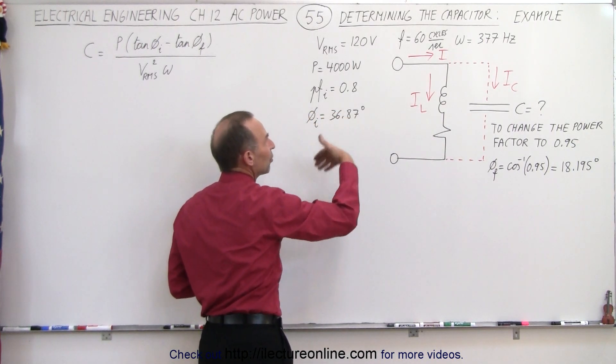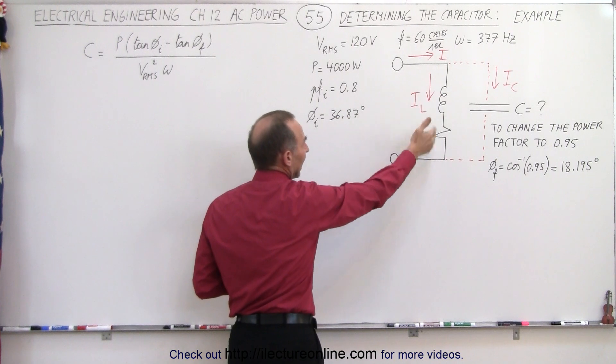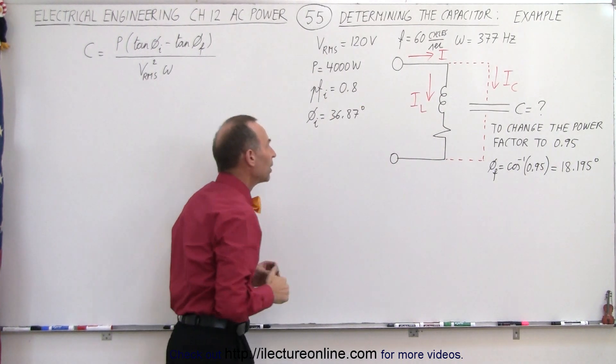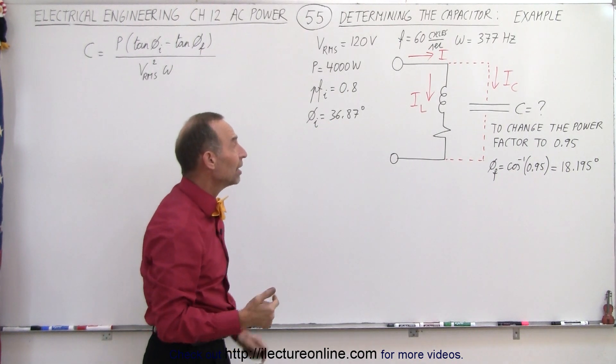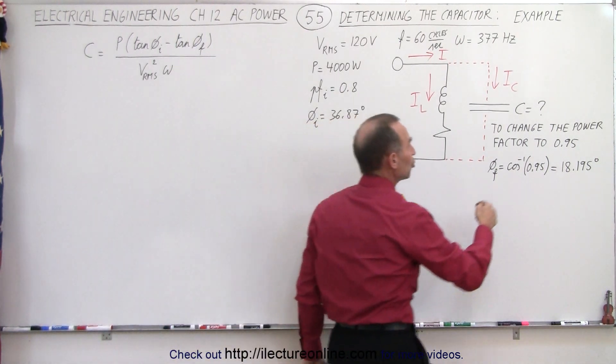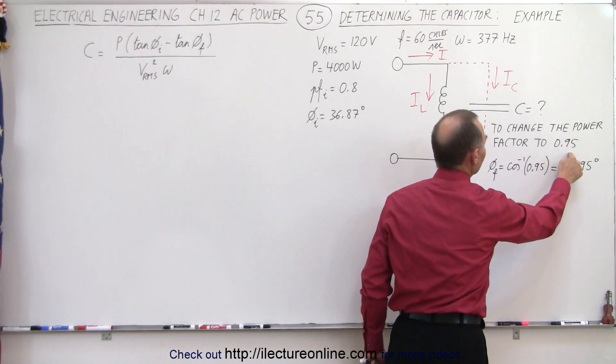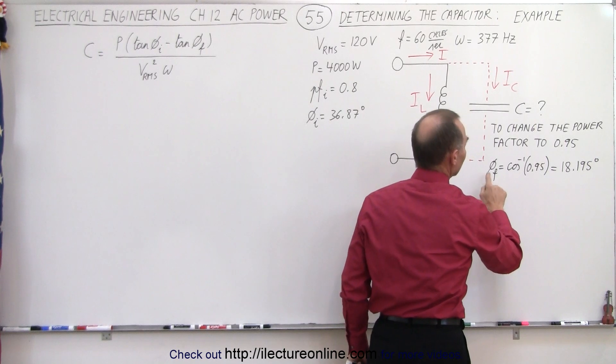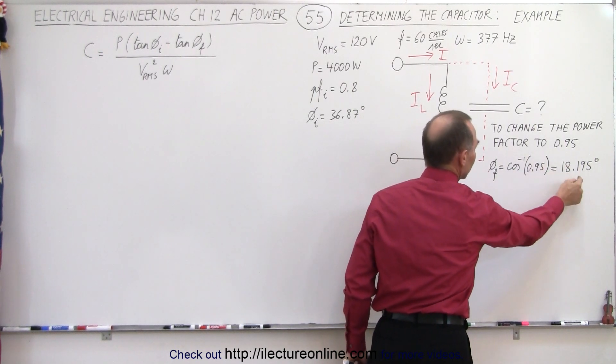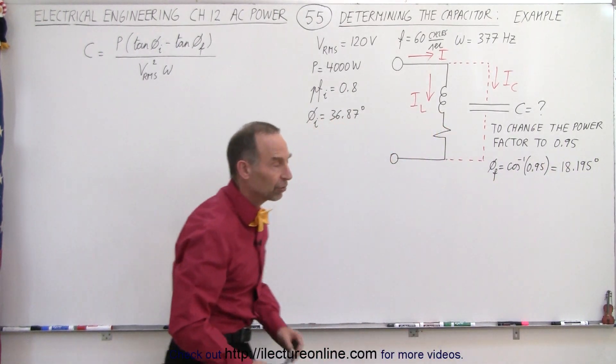Let's say that with the original inductor and resistor we had a power factor of 0.8, that means we have a phase angle of 36.87 degrees, and what we want to do is change the power factor to 0.95. So what is the capacitor required to do so? And we calculated quickly that the phase angle with the new power factor would be 18.195 degrees.